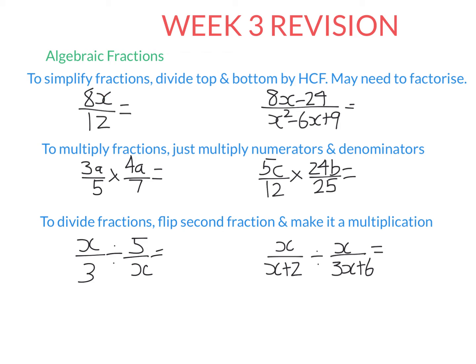Algebraic fractions are just fractions that have pronumerals or letters in them, but they work the same way as normal fractions. To simplify fractions, you divide the top and the bottom by their highest common factor. So for 8x and 12, the highest common factor is 4. So I can divide the top by 4 — 8x divided by 4 is 2x — as long as I divide the bottom by 4. The golden rule of fractions: what you do to the top, you must do to the bottom, and vice versa.